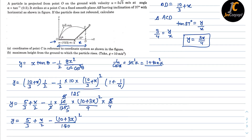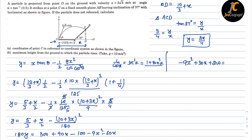Taking 180 as LCM: 180y = 300 + 90x − (10 + 3x)². Expanding the square gives 100 + 60x + 9x², so 180y = 300 + 90x − 100 − 9x² − 60x. Further simplifying: −9x² + 30x + 200 = 180y. Substituting y = 3x/4 from equation 1.